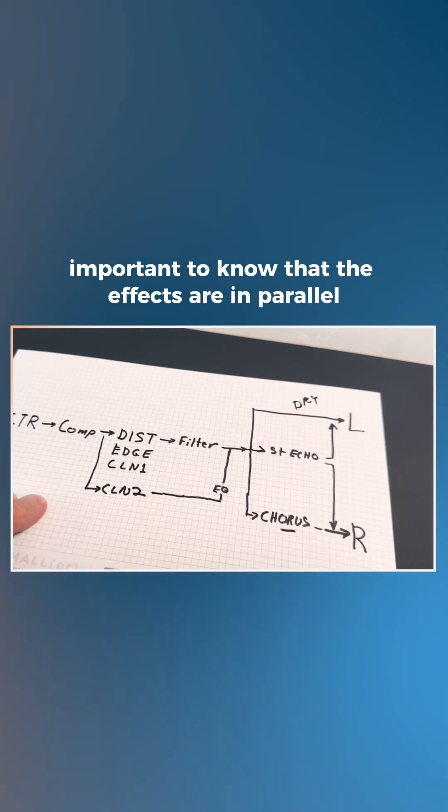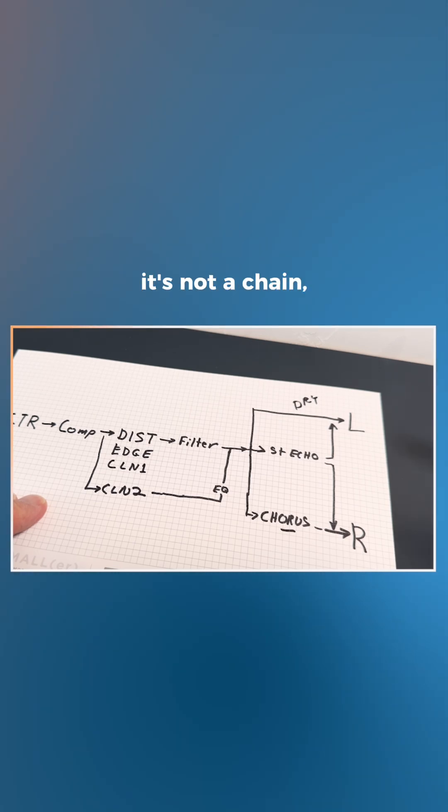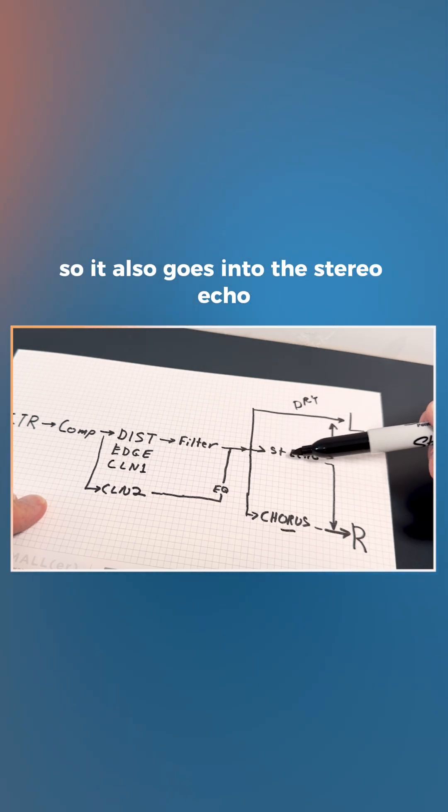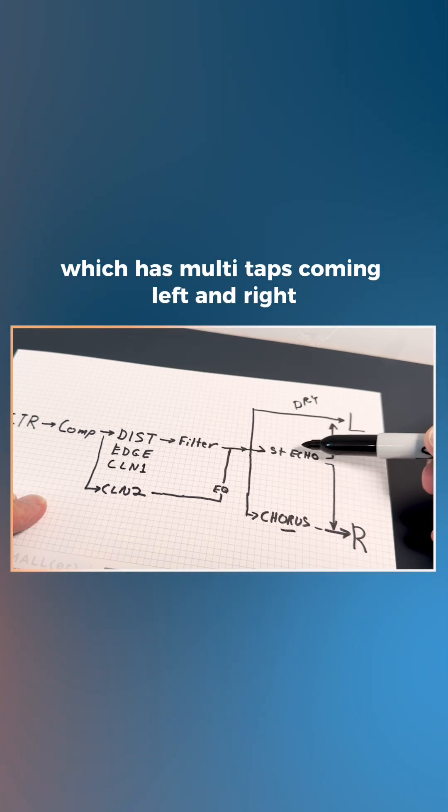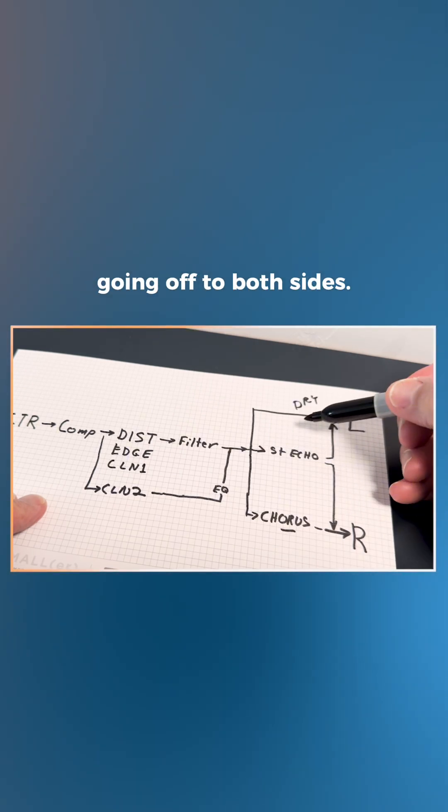It's also important to know that the effects are in parallel on here. It's not a chain. So it also goes into the stereo echo, which has multi taps coming left and right, going off to both sides.